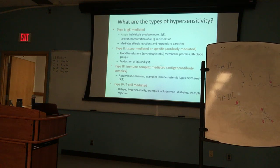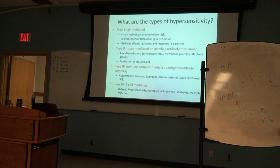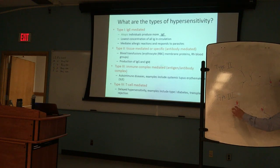Where it gets stuck is in places where you have blood flow and filtering activity, because it kind of agglutinates. You'll see it in joints, in the blood vessels themselves, and in the kidney. So that's type 3 — the big difference from type 2 is that in type 3 you form the antibody-antigen complex in circulation and it gets trapped somewhere else.